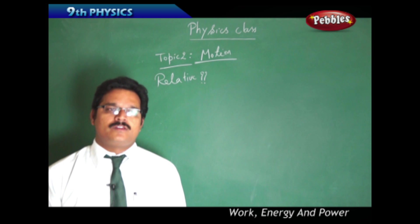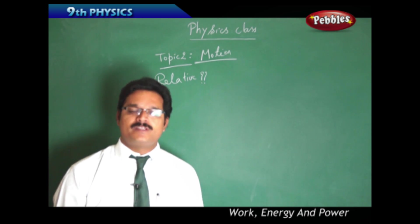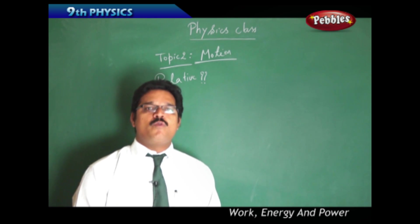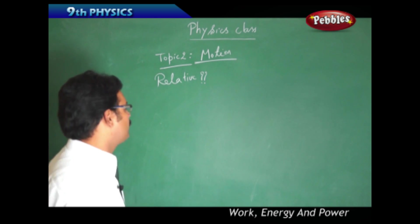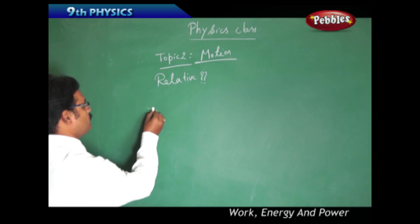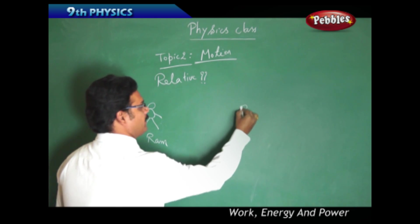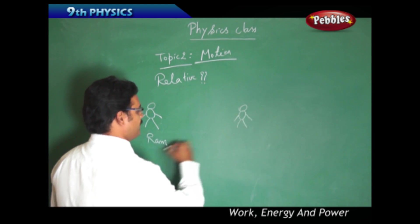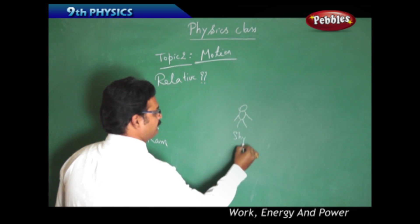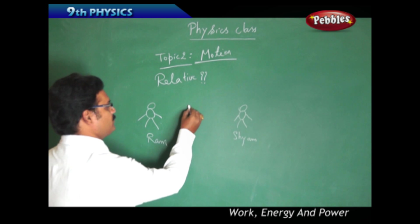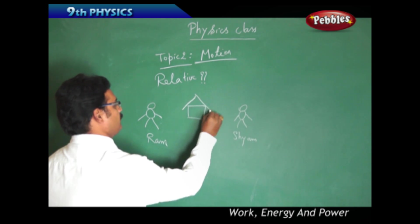Before understanding what is relative, let us take some examples. Suppose two friends, one is Ram and the second friend is Sham. Both are approaching a house.